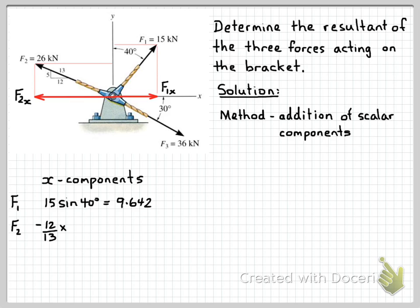We can use the ratio here. The ratio of this component F2x to the force F2 will be 12/13 times 26. It's in the negative x direction, so it's negative. So we have F2x component is minus 24 newtons.